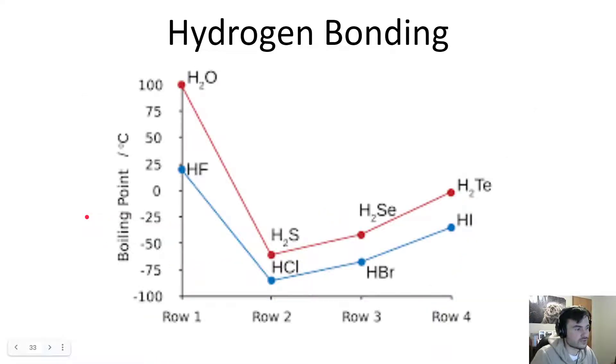And if we see on this graph, this very blurry graph, we can see that if we take H2O versus what's below oxygen on the periodic table, sulfur - H2S. Hydrogen sulfide, which is down here, boils at minus 50. No hydrogen bonding in this molecule.